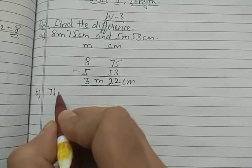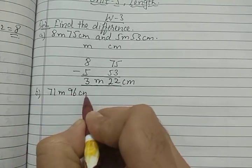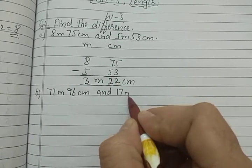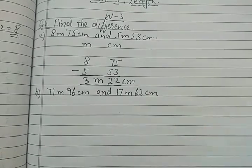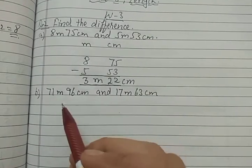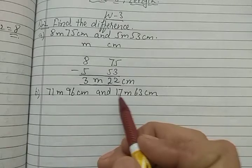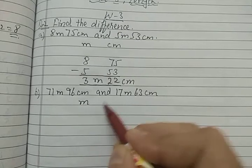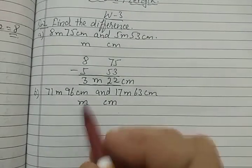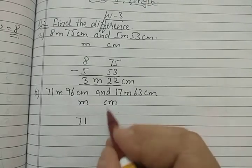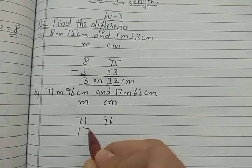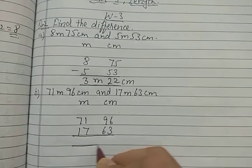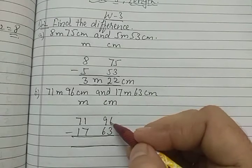Now move to part B. Part B is 71 meter 96 centimeter and 17 meter 63 centimeter. Again, first we check which length is greater. Here 71 meter is greater than 17 meter, so this one is greater. Write the units — the question is in meter and centimeter — so we write meter and centimeter, then 71 meter 96 centimeter and 17 meter 63 centimeter.